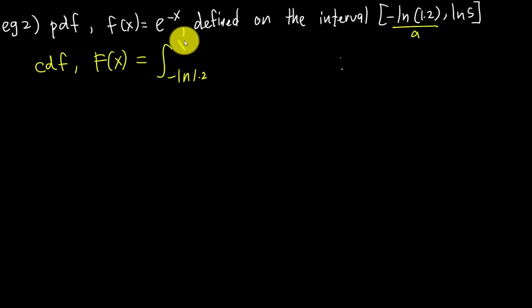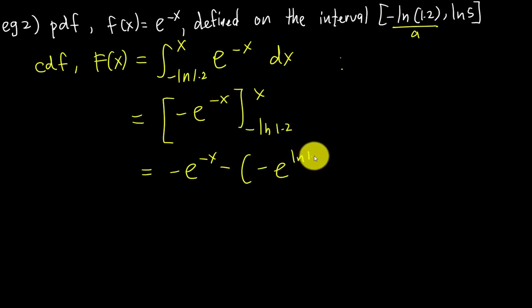The antiderivative is -e^(-x), evaluated from -ln(1.2) to x. Substituting x gives -e^(-x), and substituting -ln(1.2) gives -e^(ln(1.2)) = -1.2. Since e^(ln(1.2)) = 1.2, we have -e^(-x) - (-1.2).